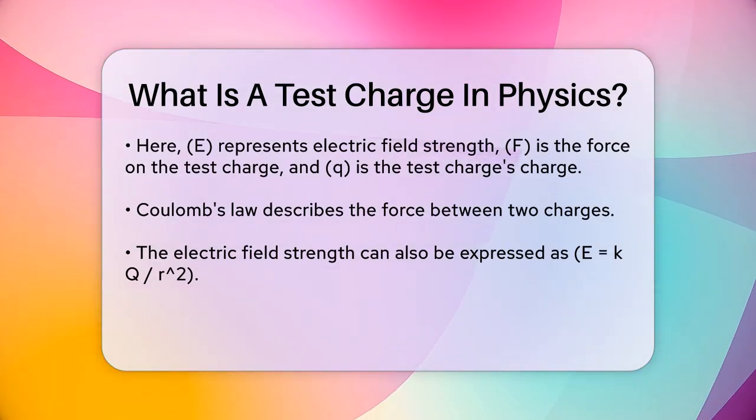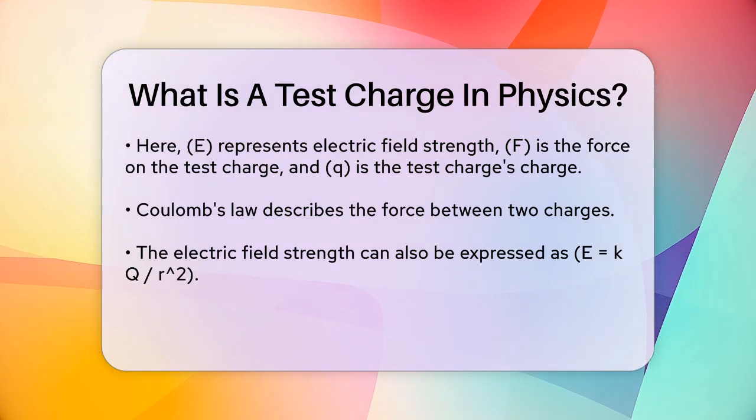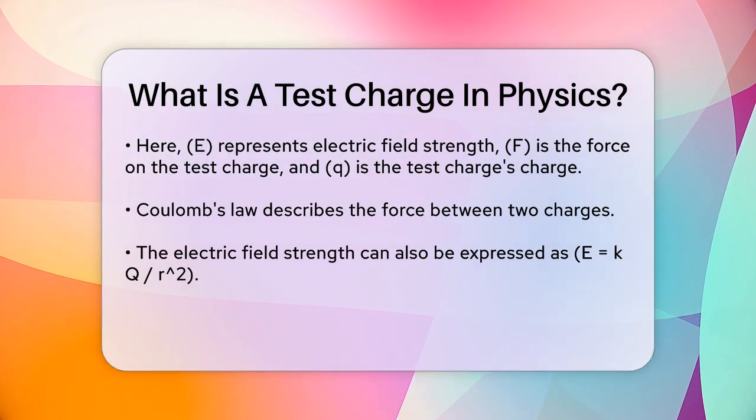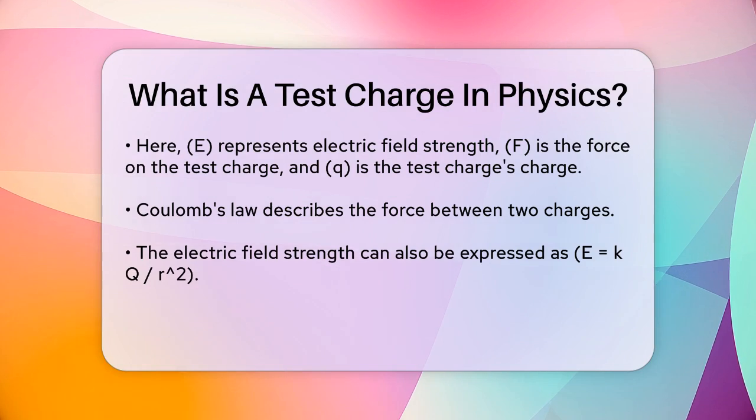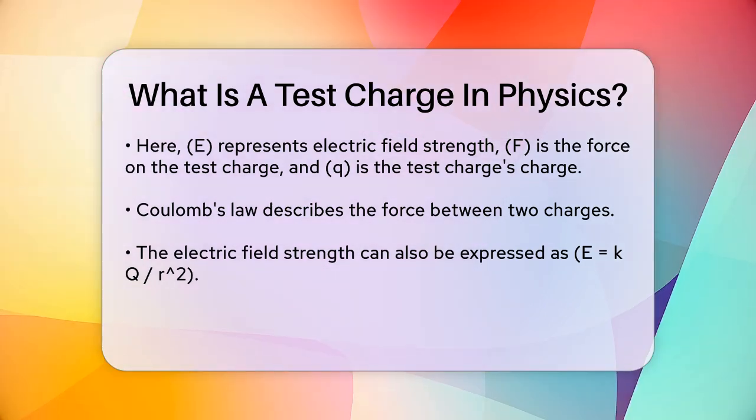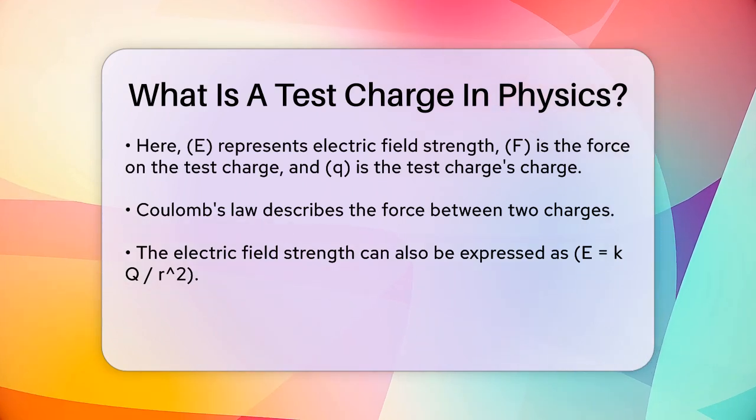To make it clearer, let's use Coulomb's law, which describes the force between two charges. If you substitute the force from Coulomb's law into the equation for electric field strength, you get E = kQ/r², where k is Coulomb's constant, Q is the charge of the source object, and r is the distance from the source object to the test charge.